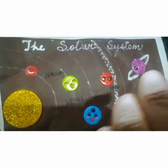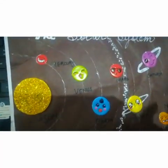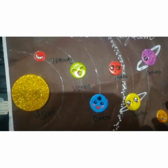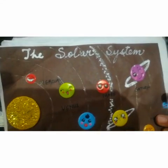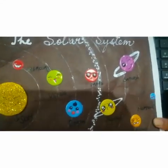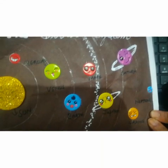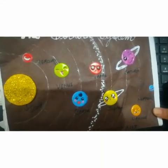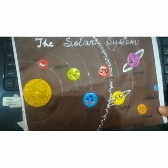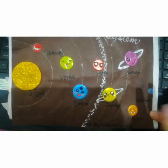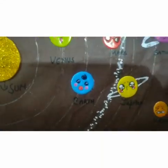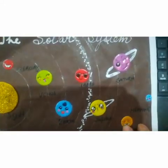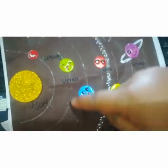These fixed paths are called orbits. Until August 2006, Pluto was also considered a planet — there were nine planets. But now Pluto is no longer considered a full planet; it is called a dwarf planet.